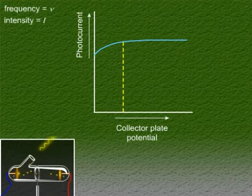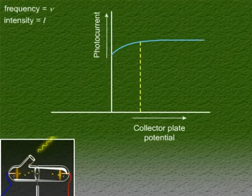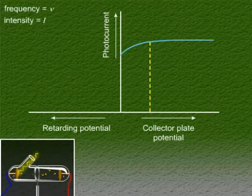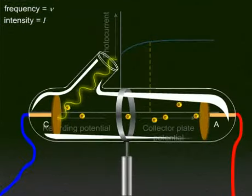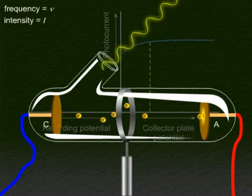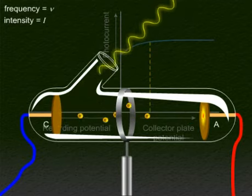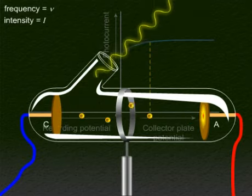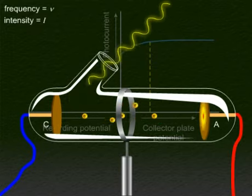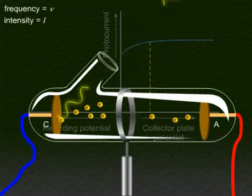Now just imagine what will happen if we instead apply a negative or a retarding potential to the collector plate with respect to the emitter plate. That is, we make it increasingly negative gradually. When we reverse the polarity in this way, the electrons are repelled by the collector plate and only a few electrons, that is the most energetic ones, will still be able to reach the collector plate. So the photocurrent will decrease rapidly.